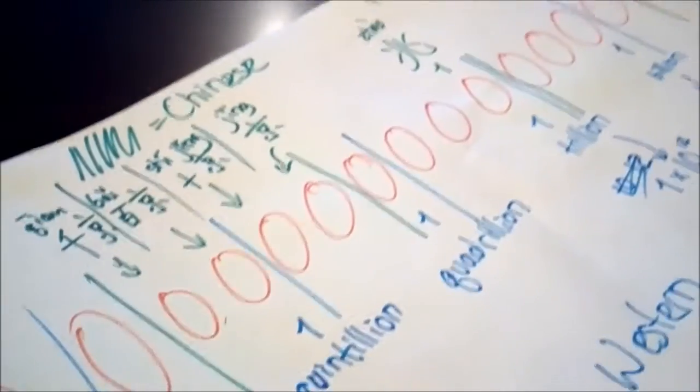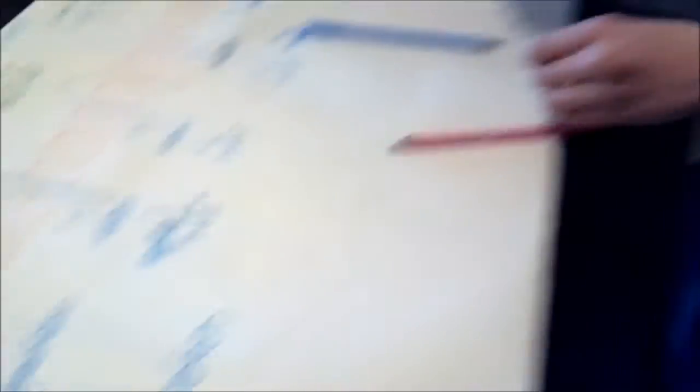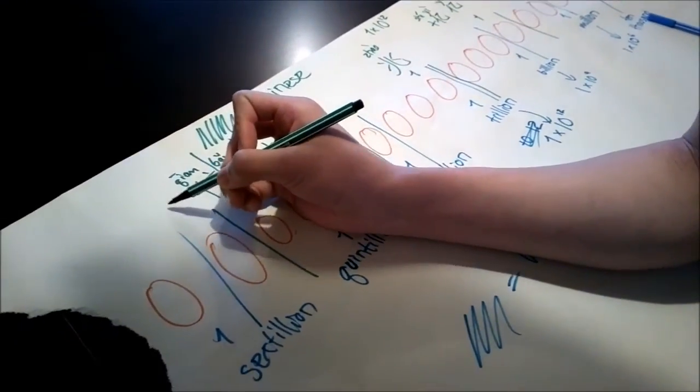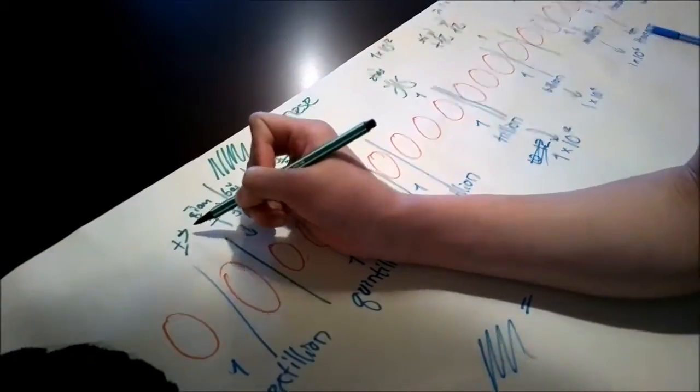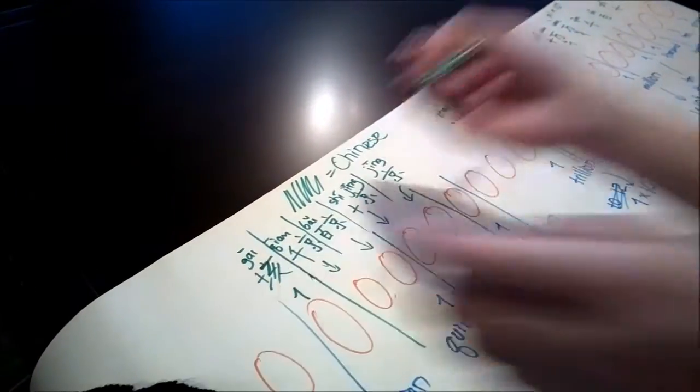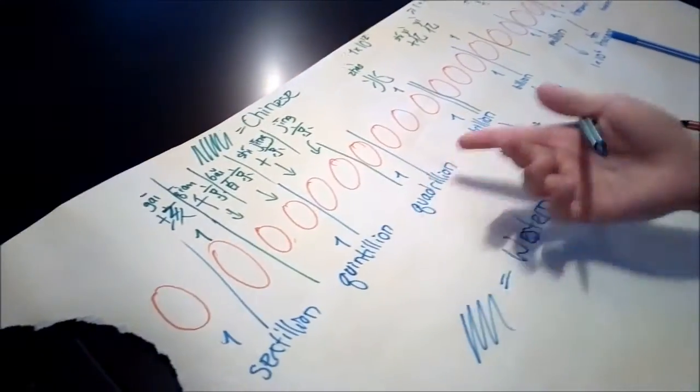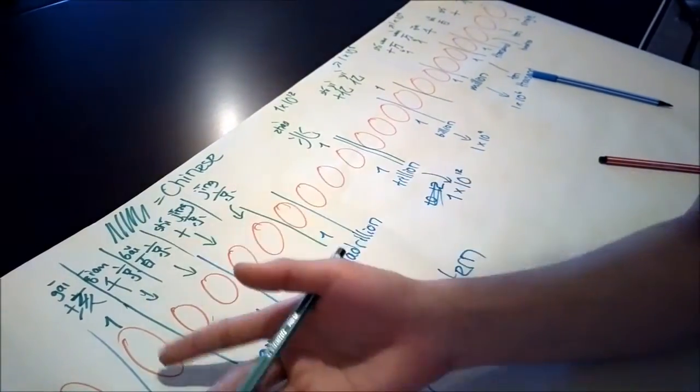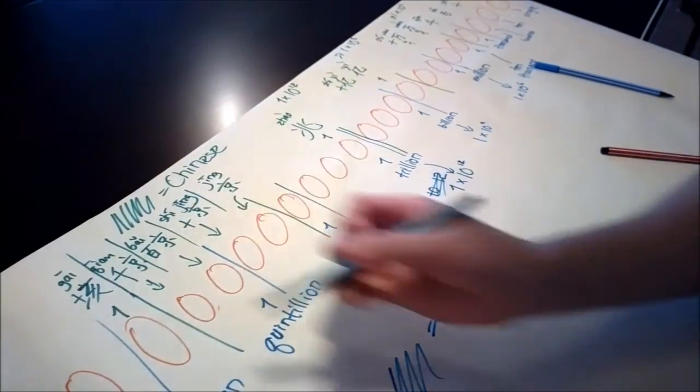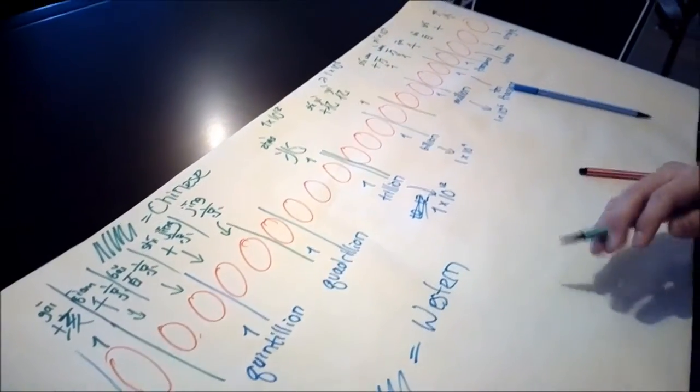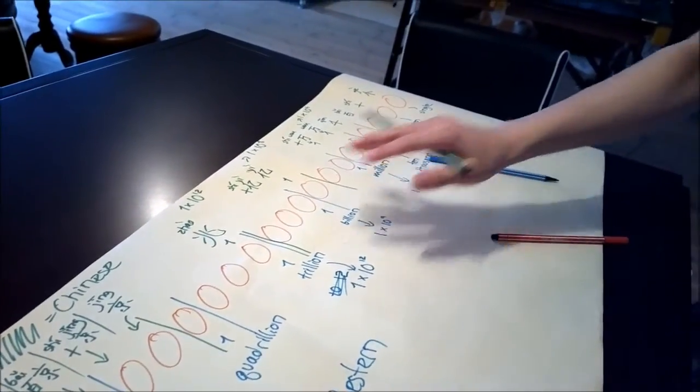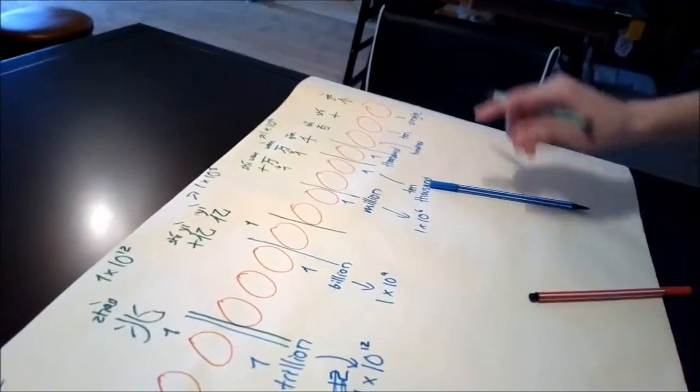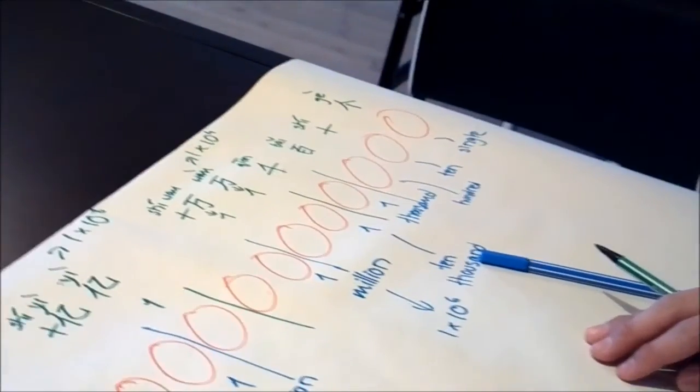So this is basically how we Chinese people do it. After jing comes gai. It's just like how they change each one, the Western culture, each one changes after three zeros. Well, this changes after every four zeros. And after jing comes gai. And then it's the same pattern over and over again. It's pretty simple after the basic, if you know what jing is and what zhao is and what yi is, then you know how to say the powers of ten in Chinese.